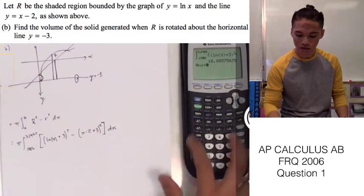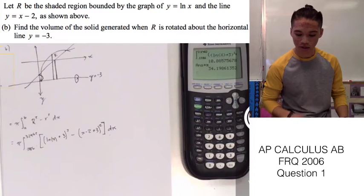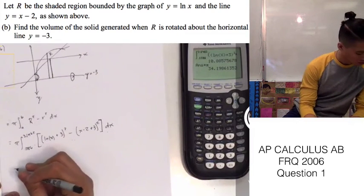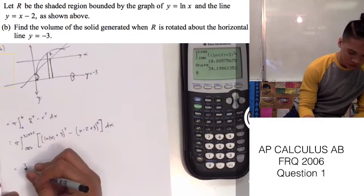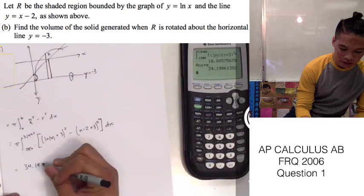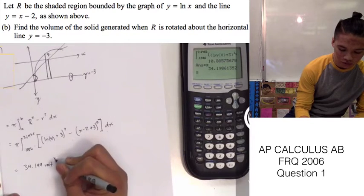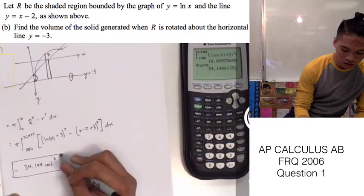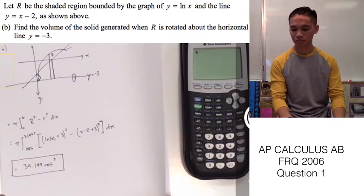We can't forget about our constant of pi, so we're going to multiply the answer by pi. This gives us the volume: 34.199 units cubed.